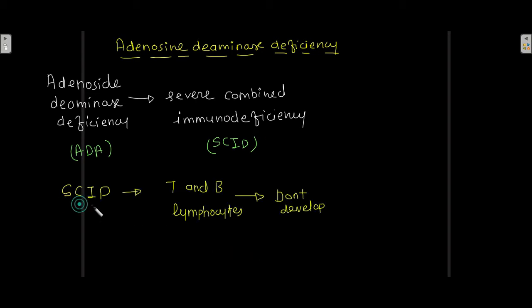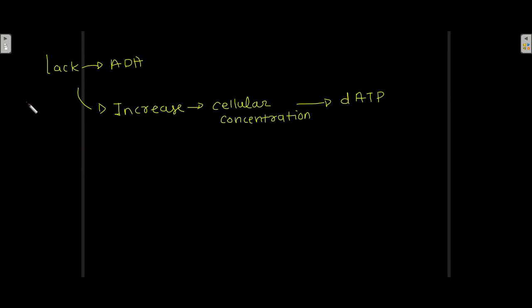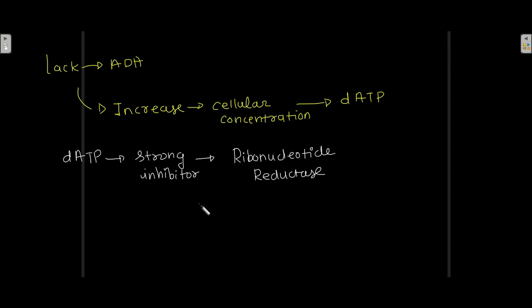In SCID, T and B lymphocytes do not develop properly. The lack of ADA leads to an increase in the cellular concentration of deoxy-ATP (dATP), because the enzyme responsible for deamination of adenosine is not present in proper concentration.